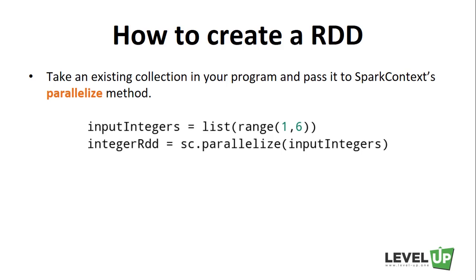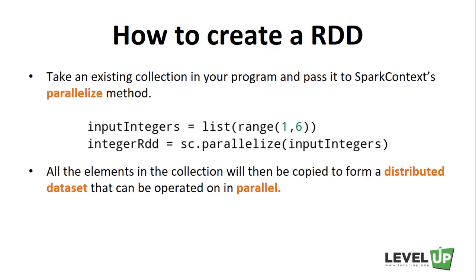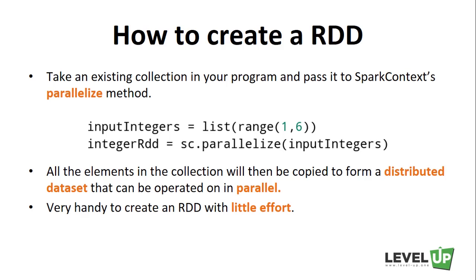Once you pass a collection to SparkContext's parallelize method, all elements are copied to form a distributed dataset that can be operated on in parallel. This approach is very handy when learning Spark or running simple tests, since you can quickly create RDDs with little effort. However, this approach is not practical in real-life scenarios because it requires the entire dataset to fit into memory on the driver machine before distributing it. In many cases, datasets are terabyte-scale and won't fit on a single machine.